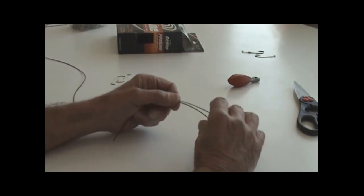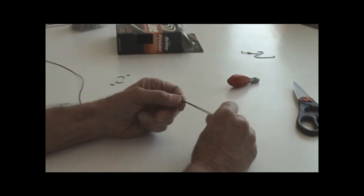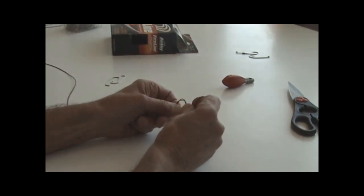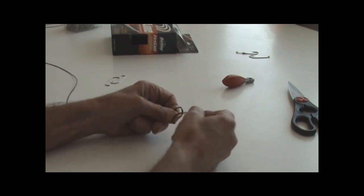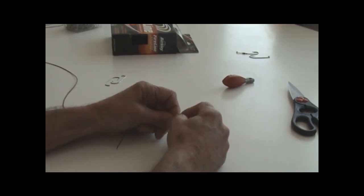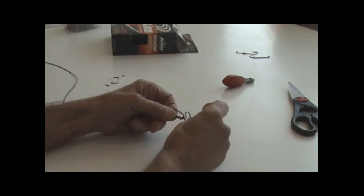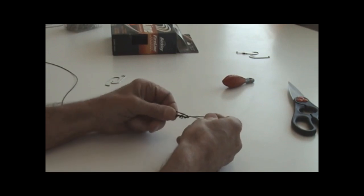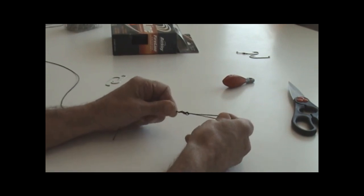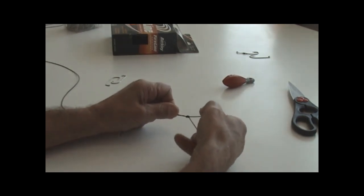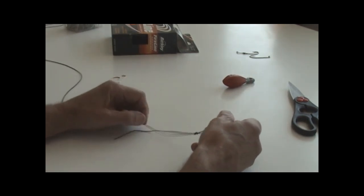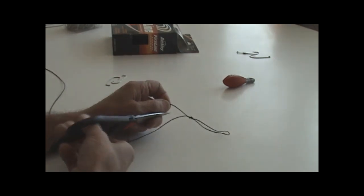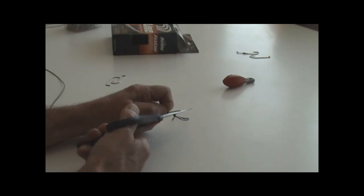Double over the line, make a loop, through once, through twice, three times, and pull it down. Okay, the end piece you can snip off.